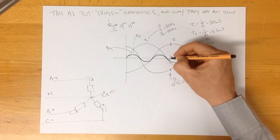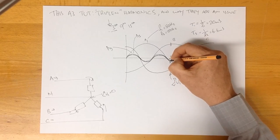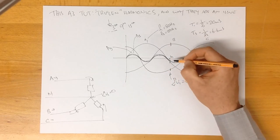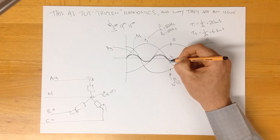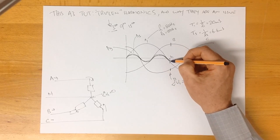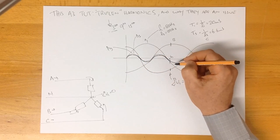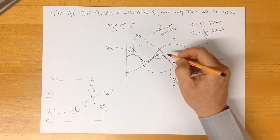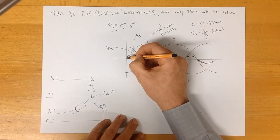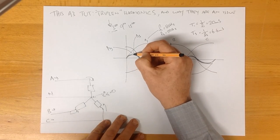However, if we look at this particular point in time here for our third harmonic, we can see that the sum of the third harmonic from phase A and the third harmonic from phase B and the third harmonic from phase C is not zero. The sum of all of these harmonics is actually going to be three times this.